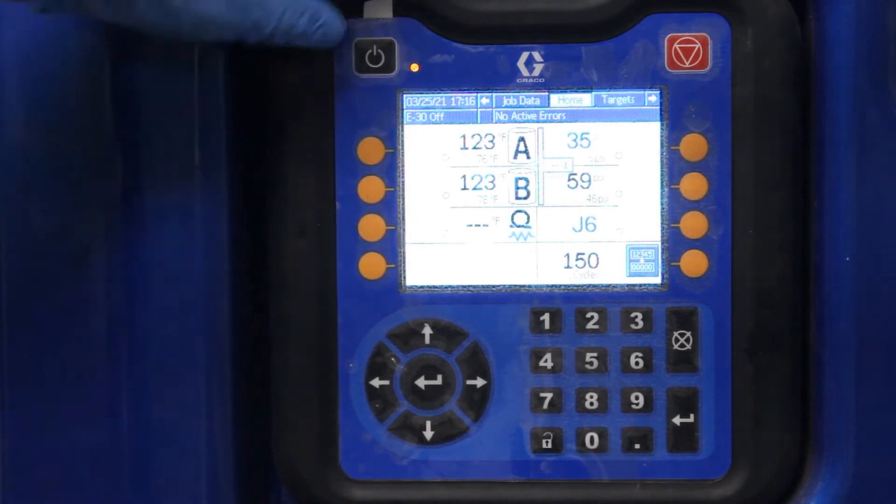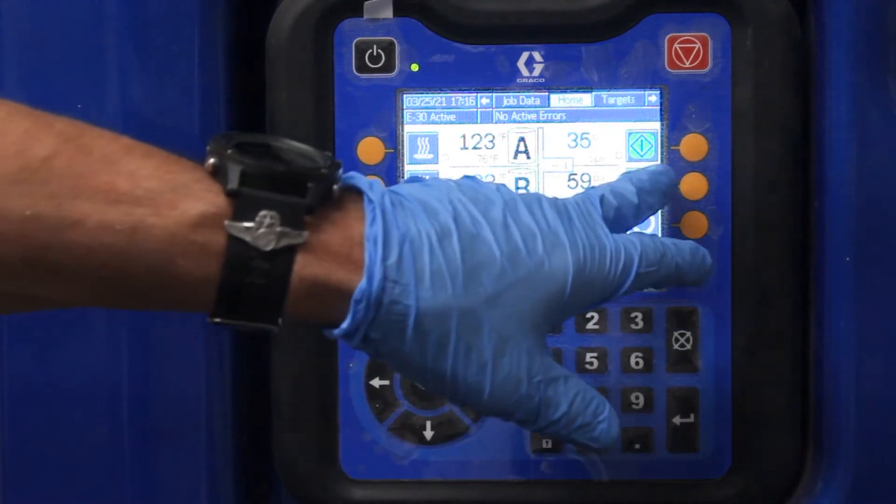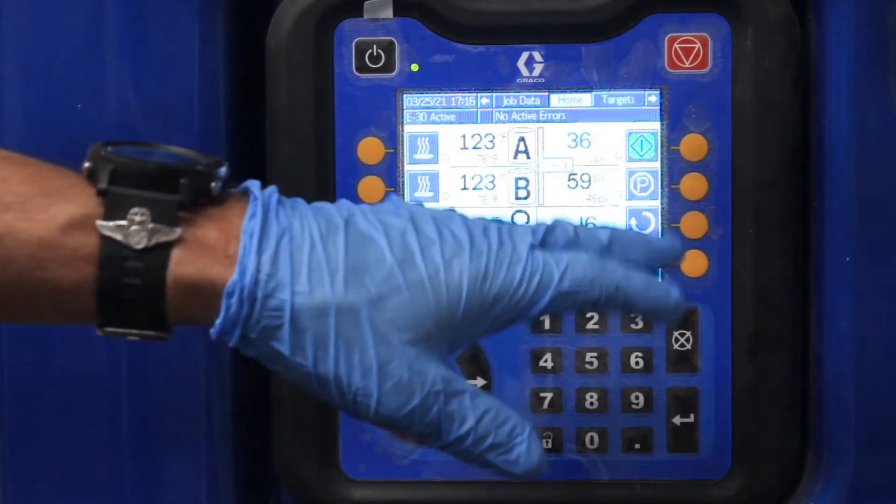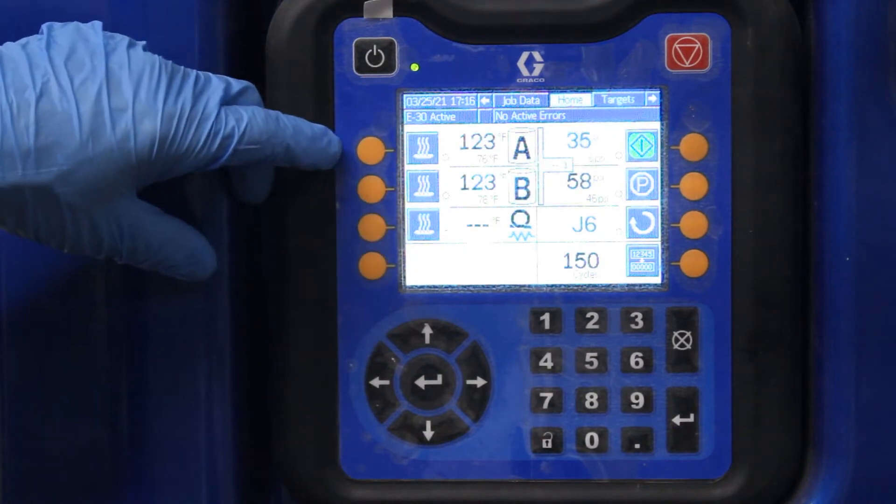When you push the black button, the screen's going to change a little bit. Now, basically, the machine's in run mode. All I have to do is pressurize it. These buttons here, when they're dark blue, they're off.